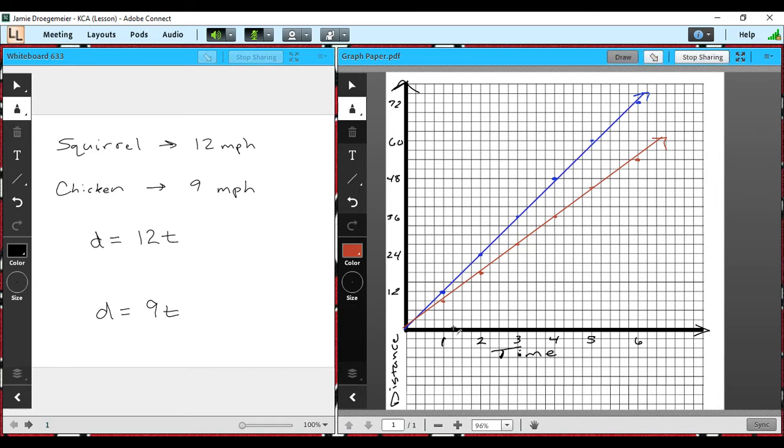And so I've graphed these here in blue. You can see this would be the squirrel. We have the time along the x-axis on the bottom, the distance along the y-axis on the left side here. And so you can see that the squirrel basically from the start would be ahead of the chicken.